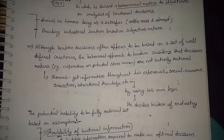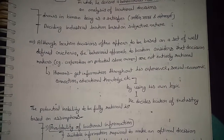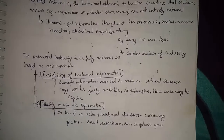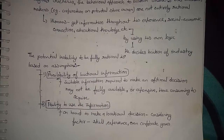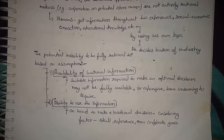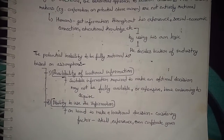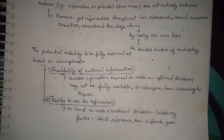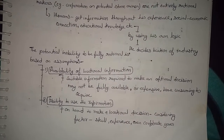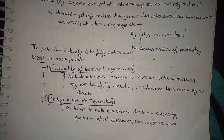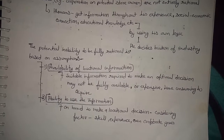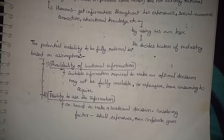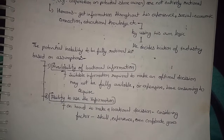By using that knowledge, a person uses their own logic and then decides the location of the industry — that is what Pred wanted to convey. The potential inability to be fully rational relates to the availability of locational information. Suitable information required to make an optimal decision may not be fully available, or may be expensive and time-consuming to acquire.